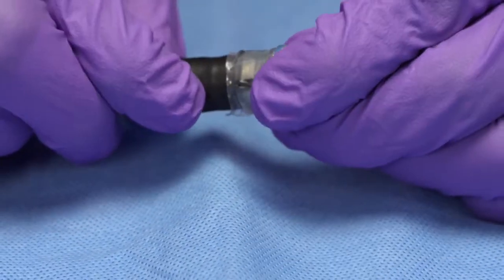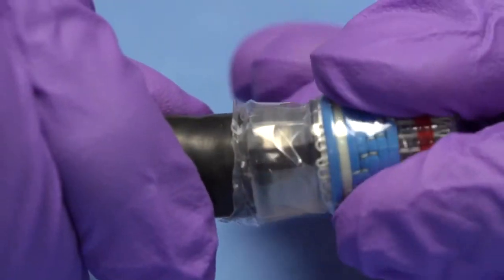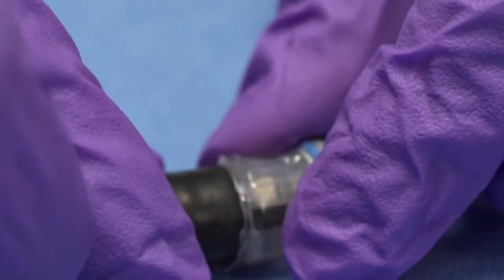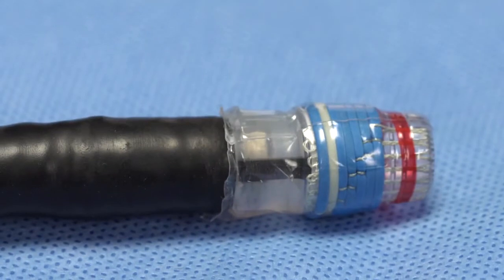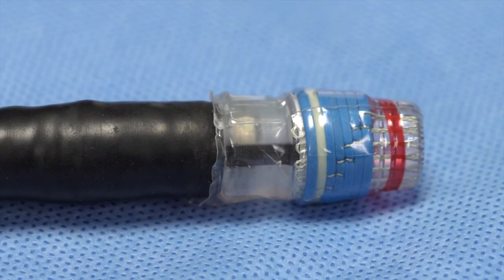Secure the ligating unit to the endoscope by twisting or rocking the soft proximal adapter of the ligating unit while pushing it onto the distal tip of the endoscope. The ligating unit should be pushed until the tip of the endoscope is up against the rigid part of the ligating unit cylinder.